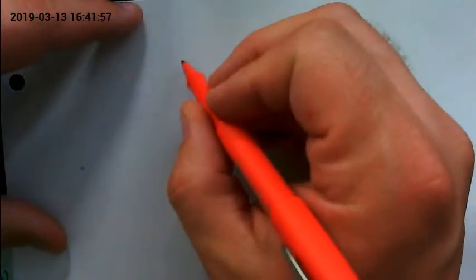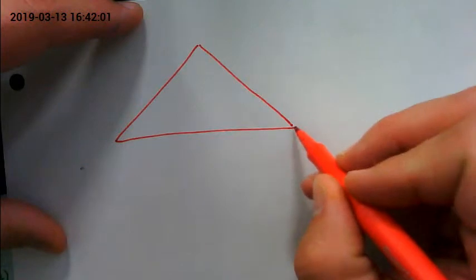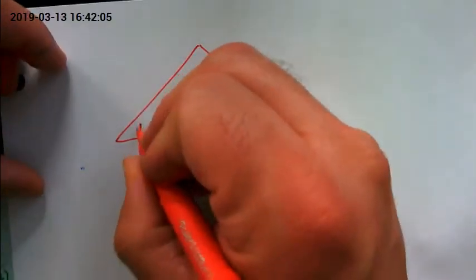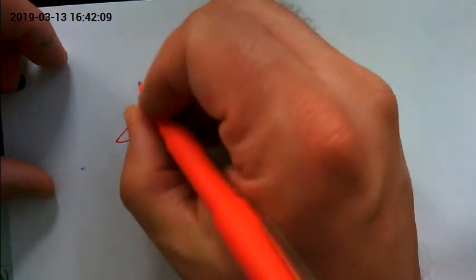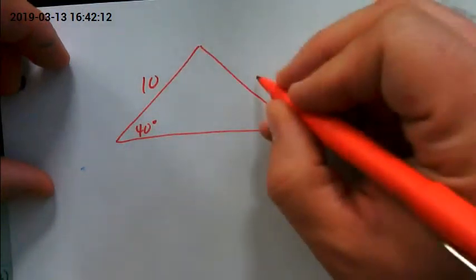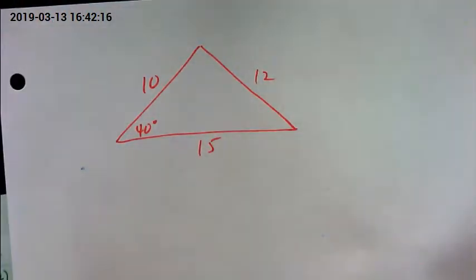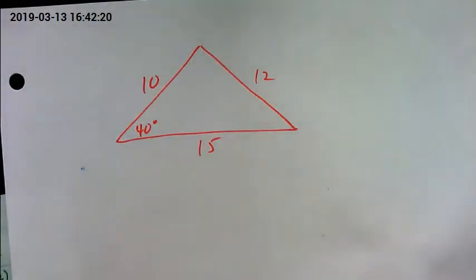If you're trying to find a triangle given SAS—given two sides and an included angle—so if I was told that this angle was 40 degrees and I knew that this side, and let's say I was given all the sides. I don't know if this would actually work out to be a good triangle, but if I was given all these pieces.